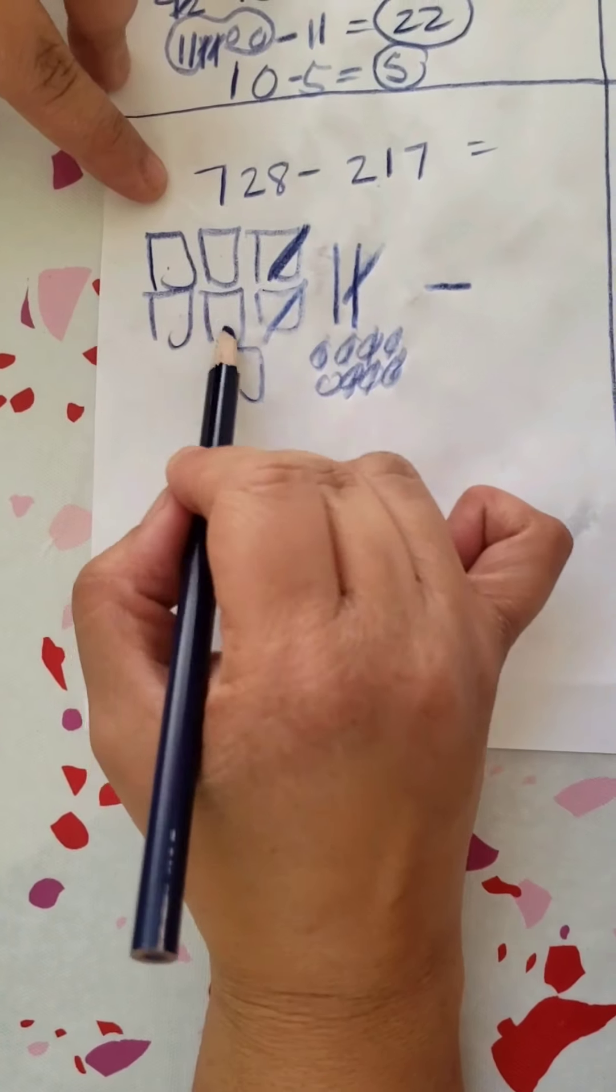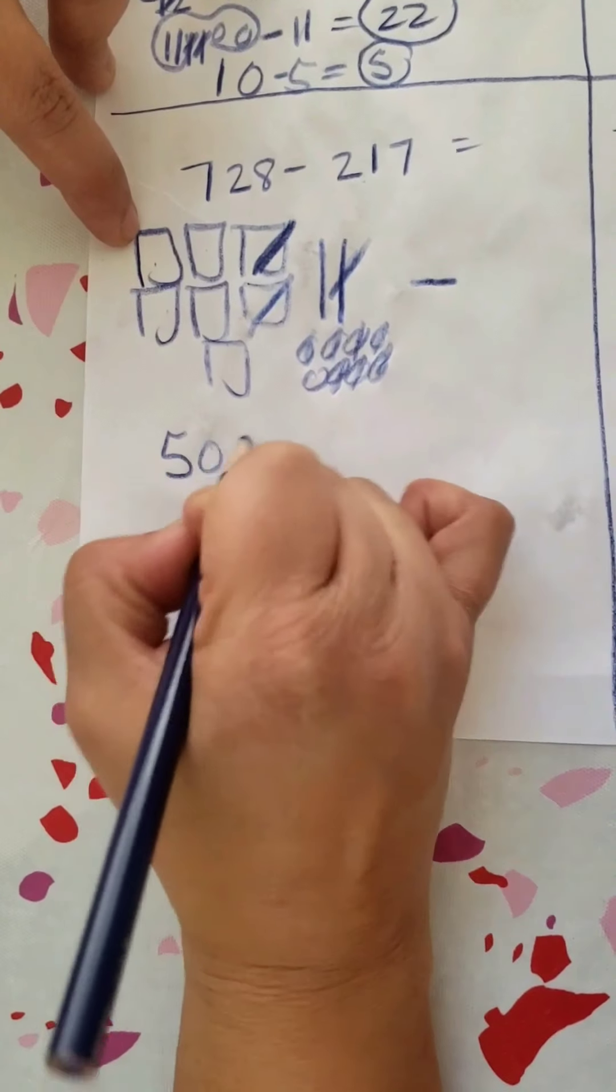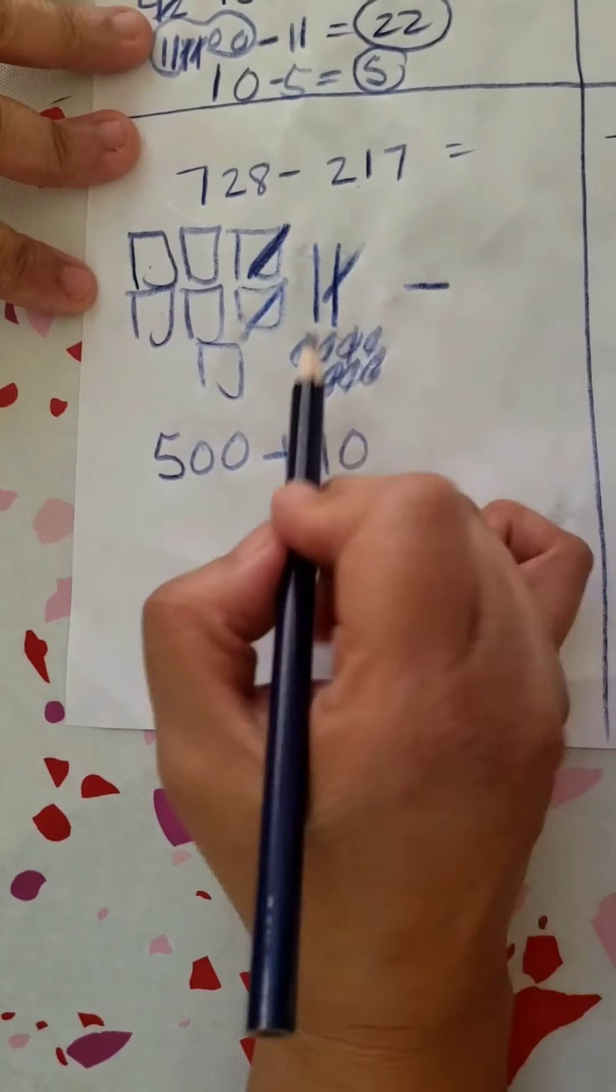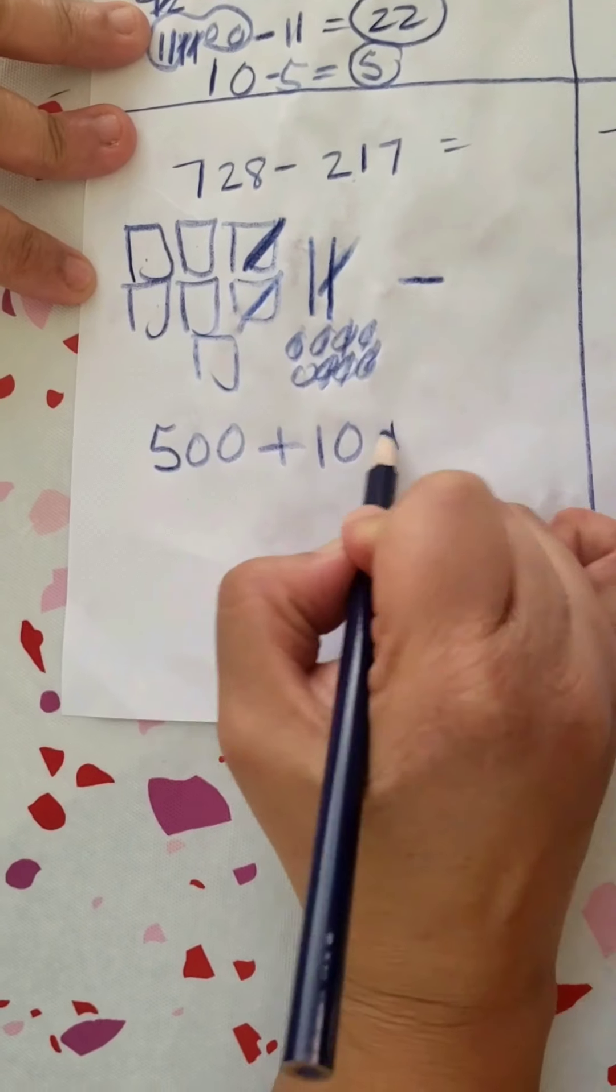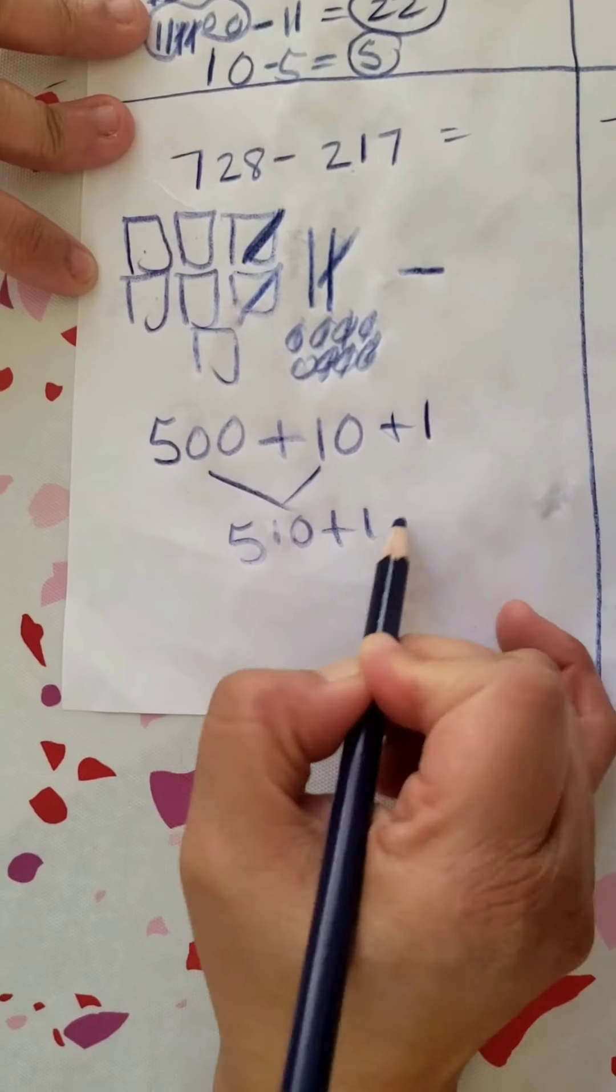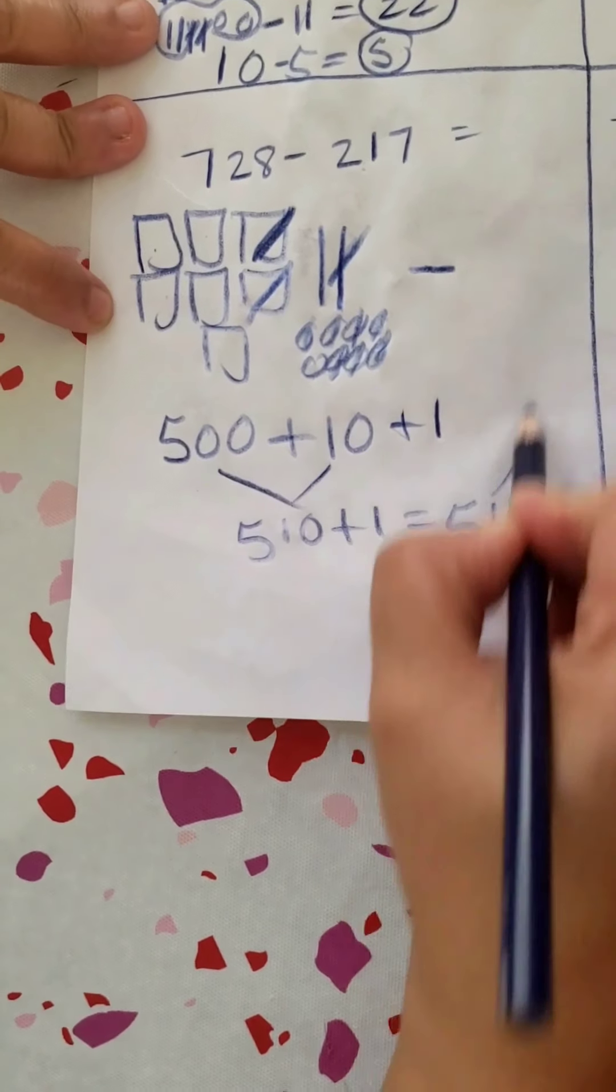So what is left is 1, 2, 3, 4, 5. I have 500 plus one ten, and then I have one one left. So I know that this is 500, 10 plus 1 equals 511.